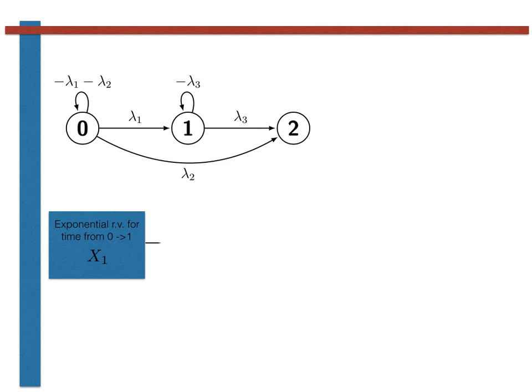We then generate a random variable, X2, from an exponential distribution with parameter lambda 2, in order to work out how long we will have to wait for a transition from state 0 to state 2.